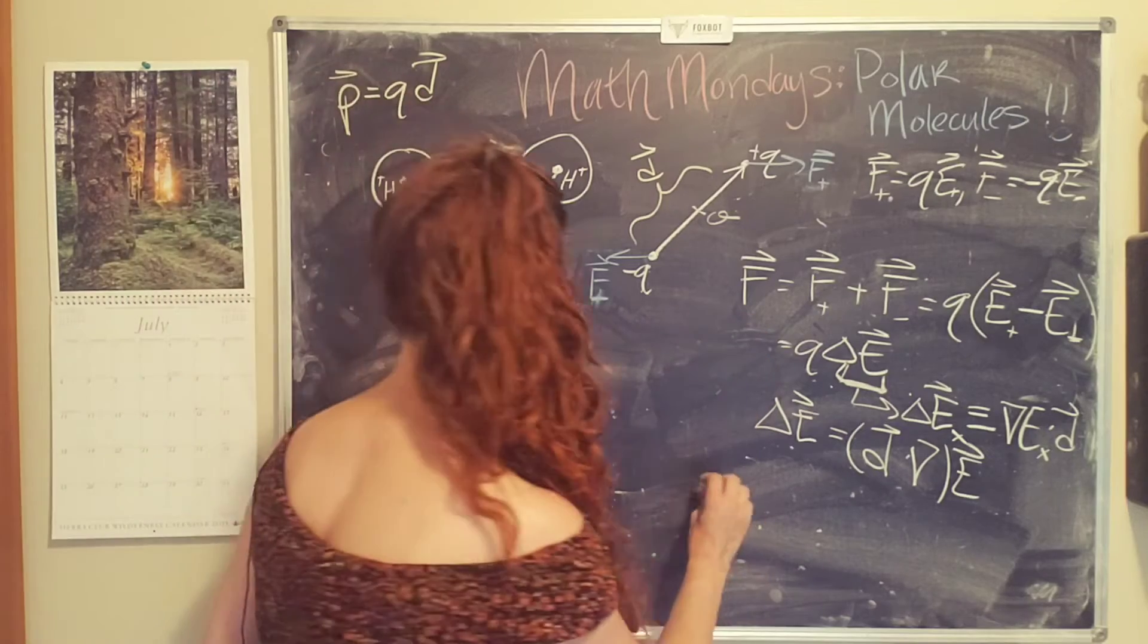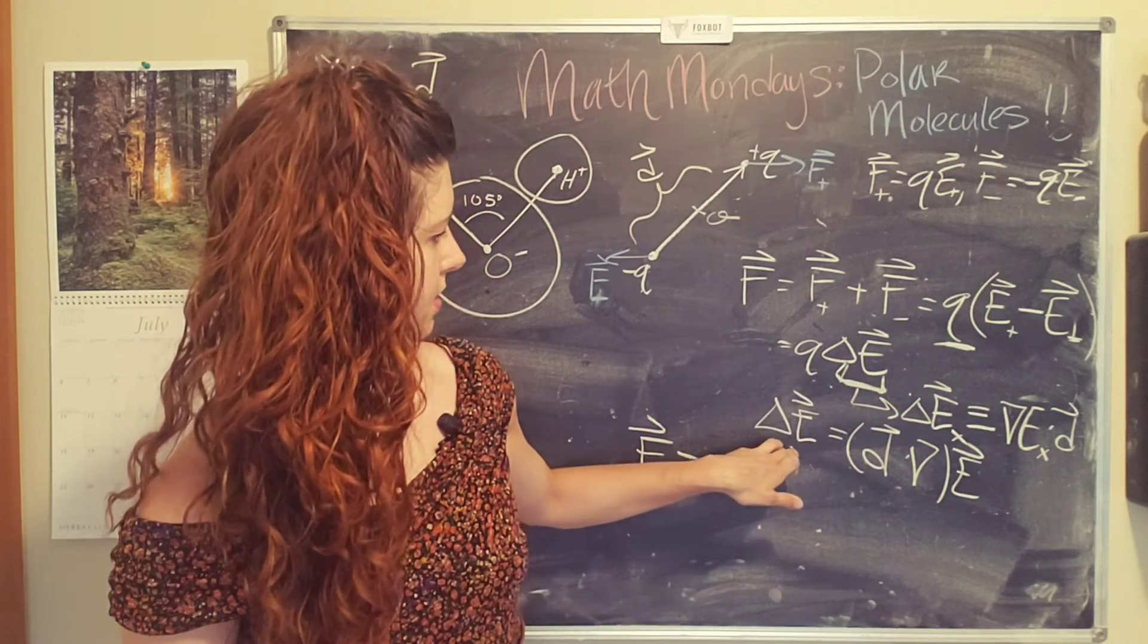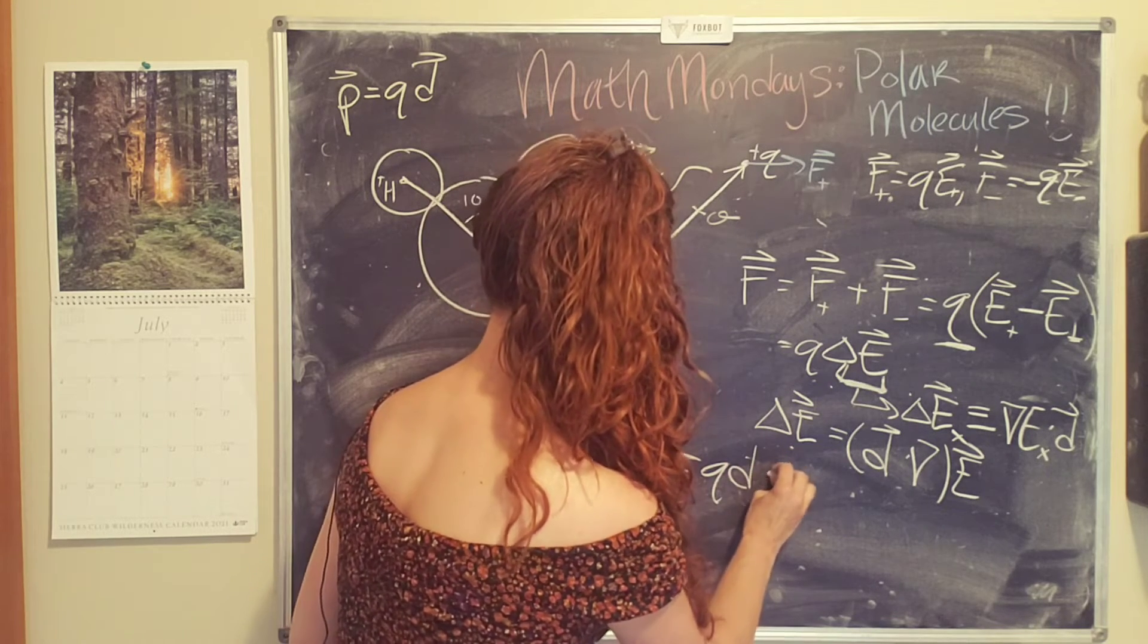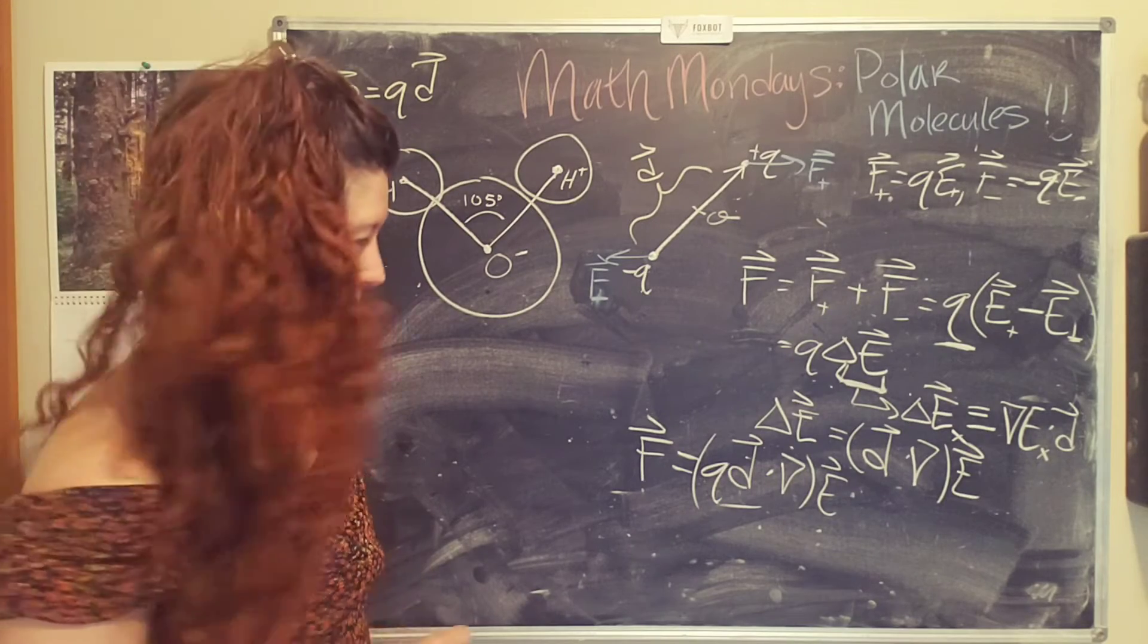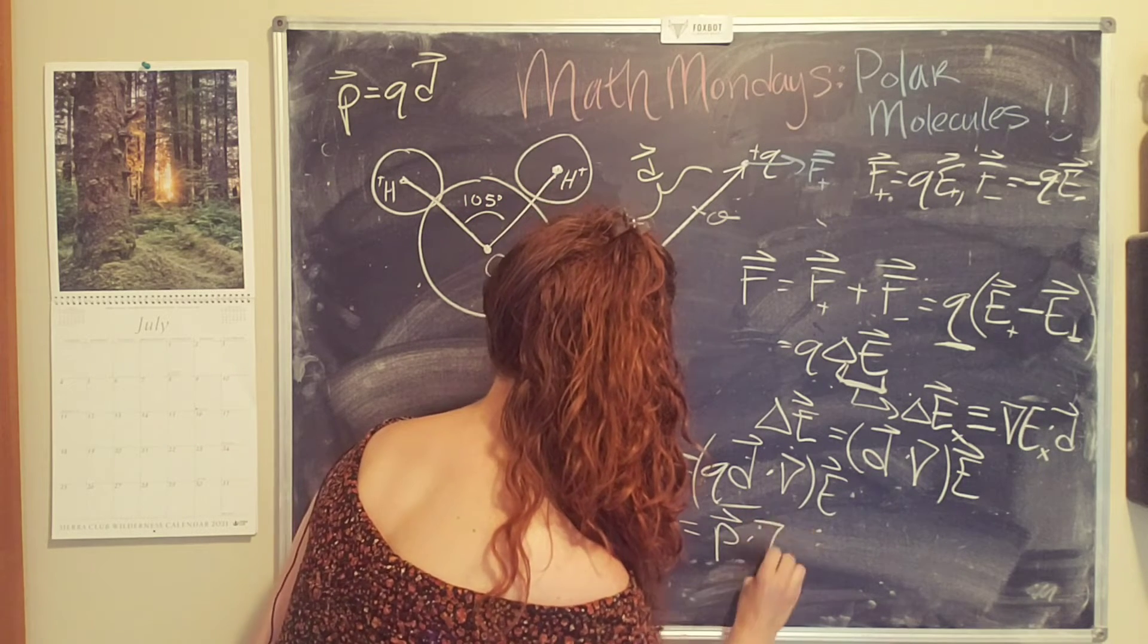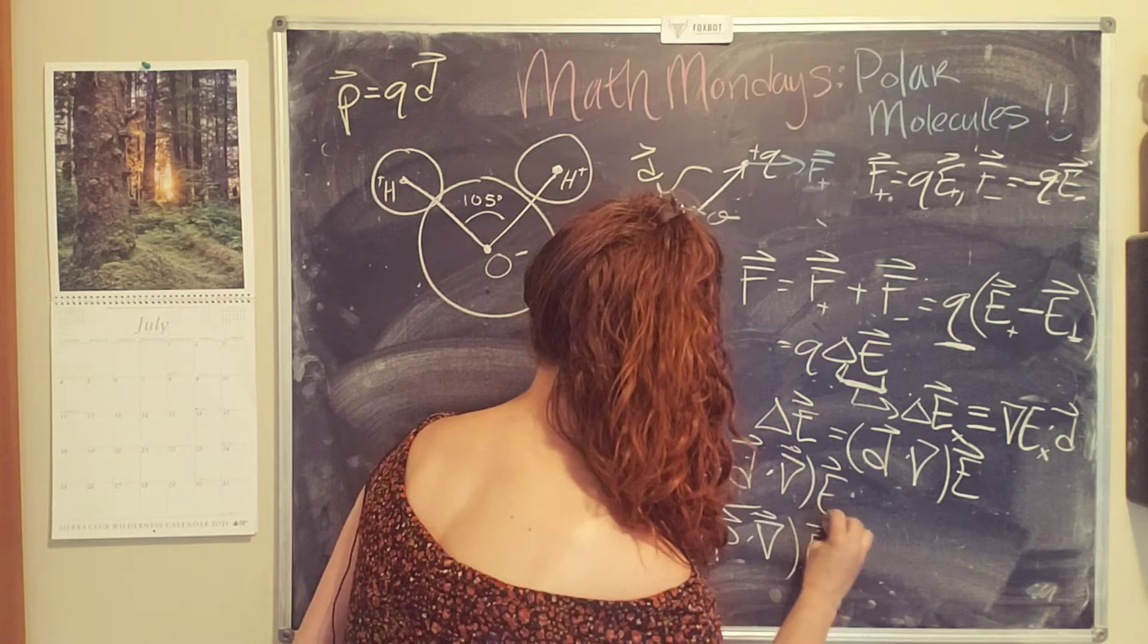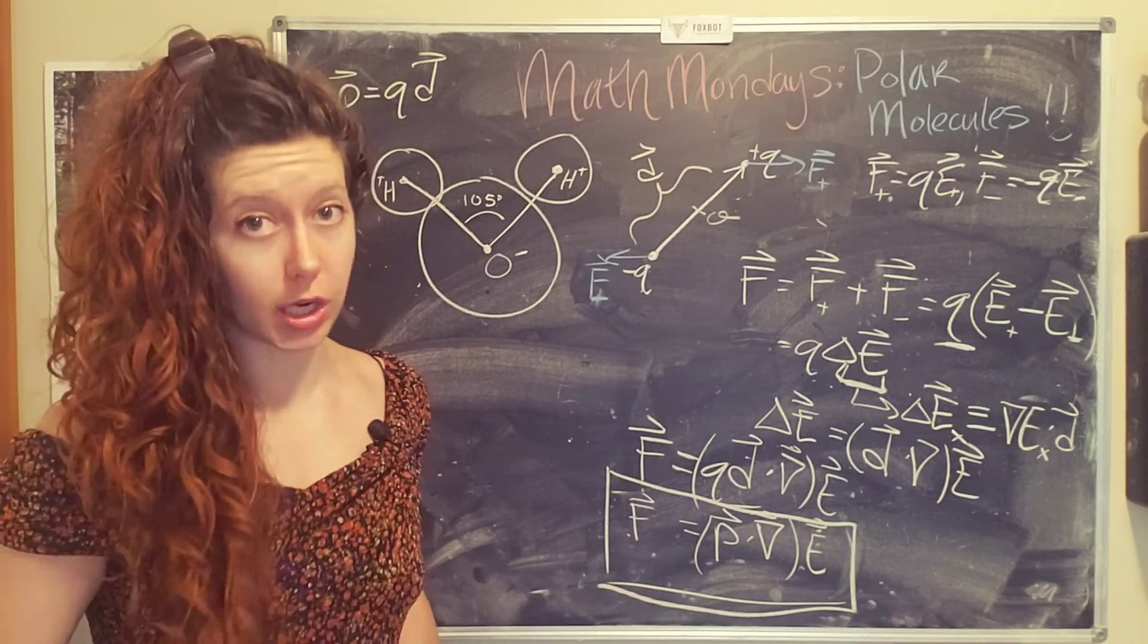And so then we can simplify this force. So when we plug it back in, so we're going to replace this quantity with this equation, we have a factor of Q here, we have Q, we can move it inside, Q D dot del times E. Hey, our dipole moment showed up again. And so the final equation that we get is the dipole moment dot R gradient, which is a vector, that's why it's got a dot product, times E. So this is the net force due to a changing electric field.